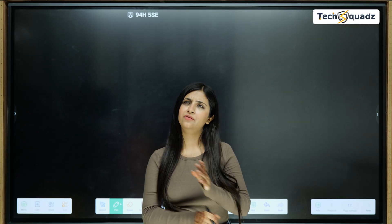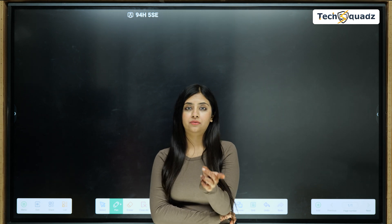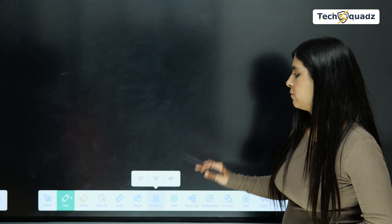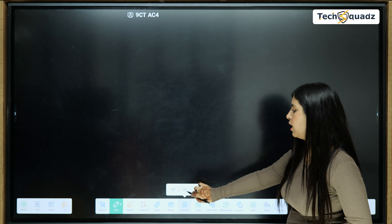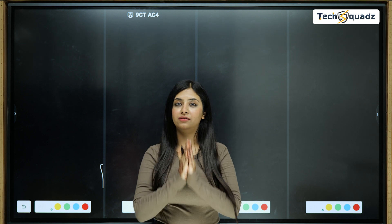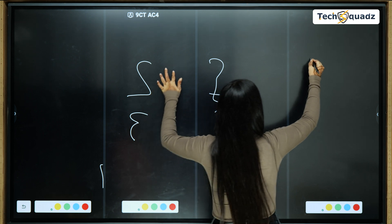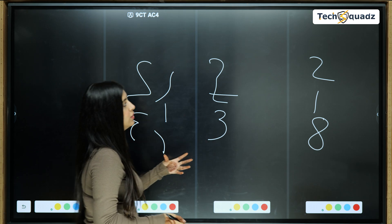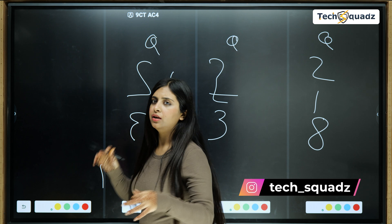What if I want to conduct a competitive analysis between my students — is there a feature for that? Yes! We have a feature called Partition where you can bifurcate your screen into two, three, or four parts. With four parts, you get four bifurcated screens and two people can write on this together. You can write a question in each section and call up students — whoever solves the question first wins.